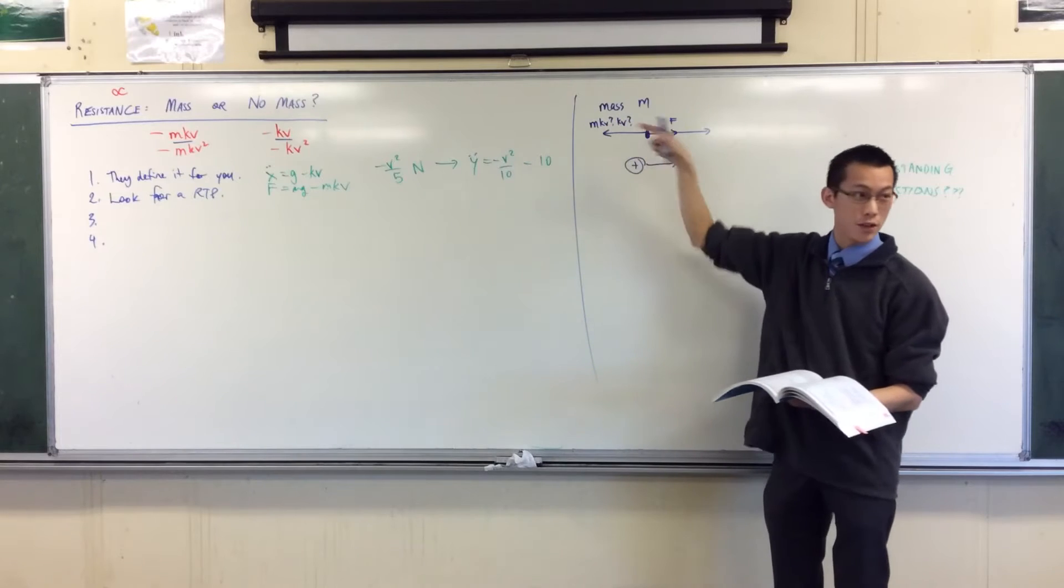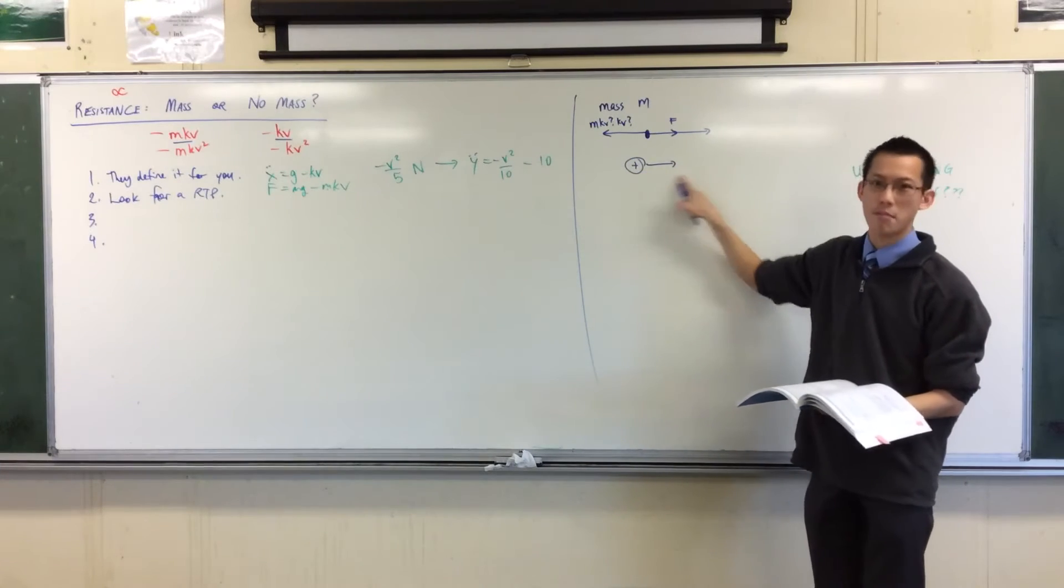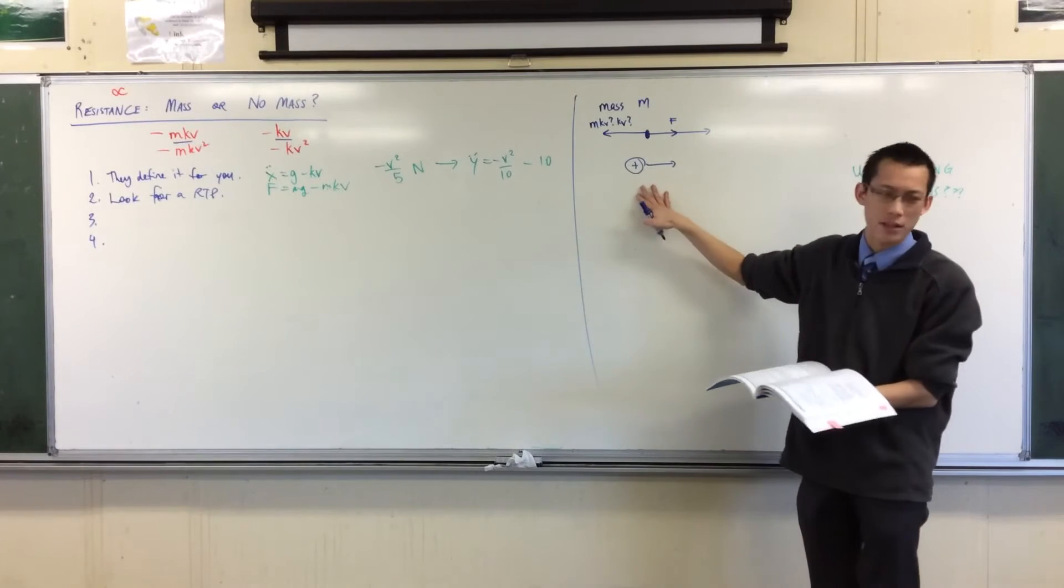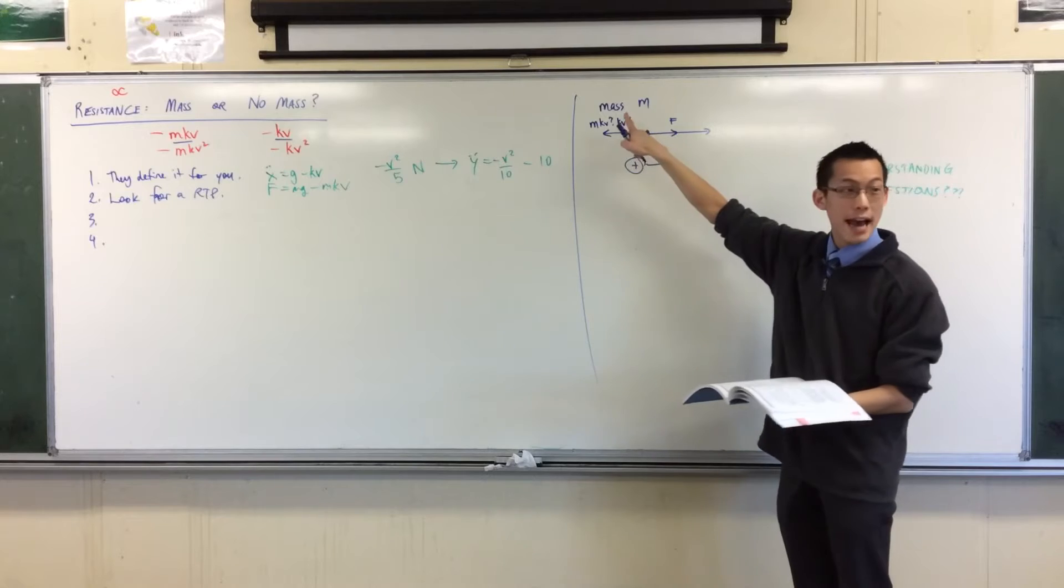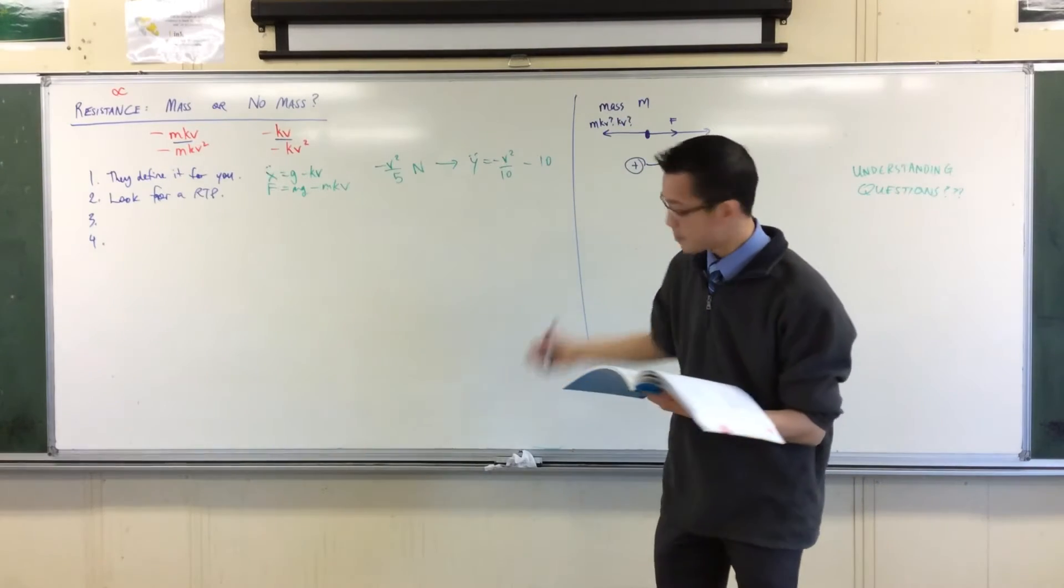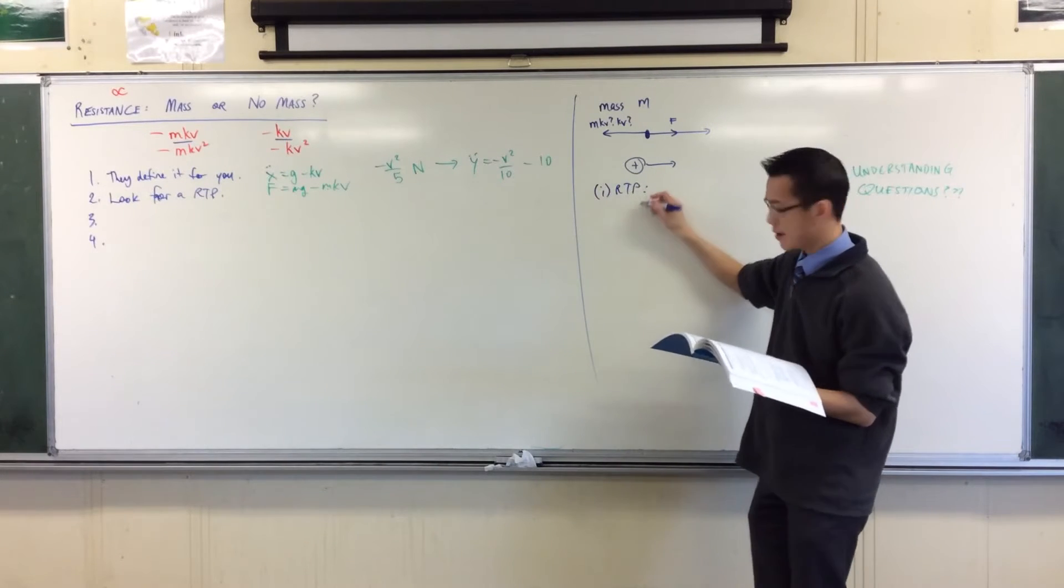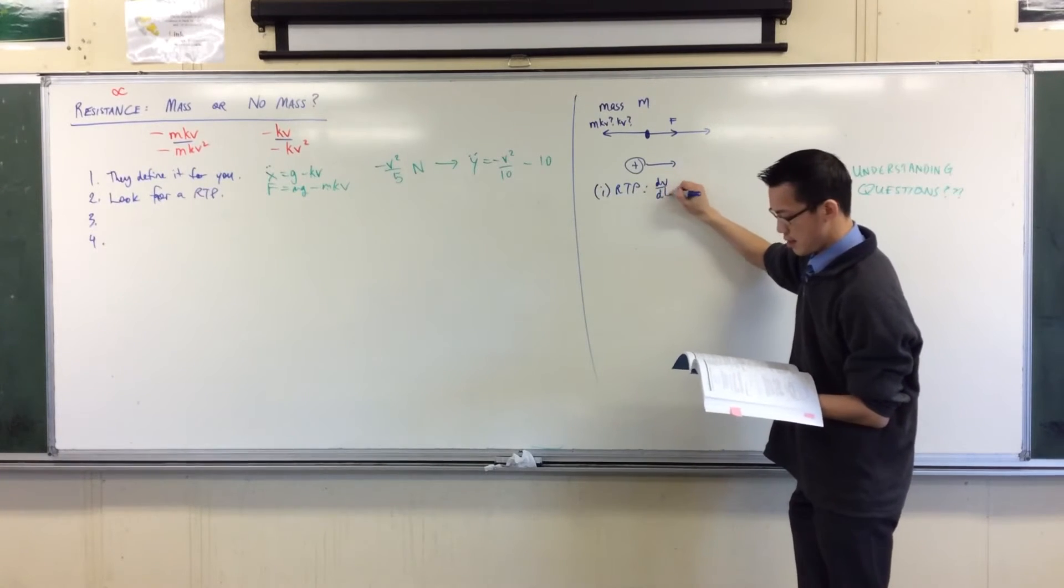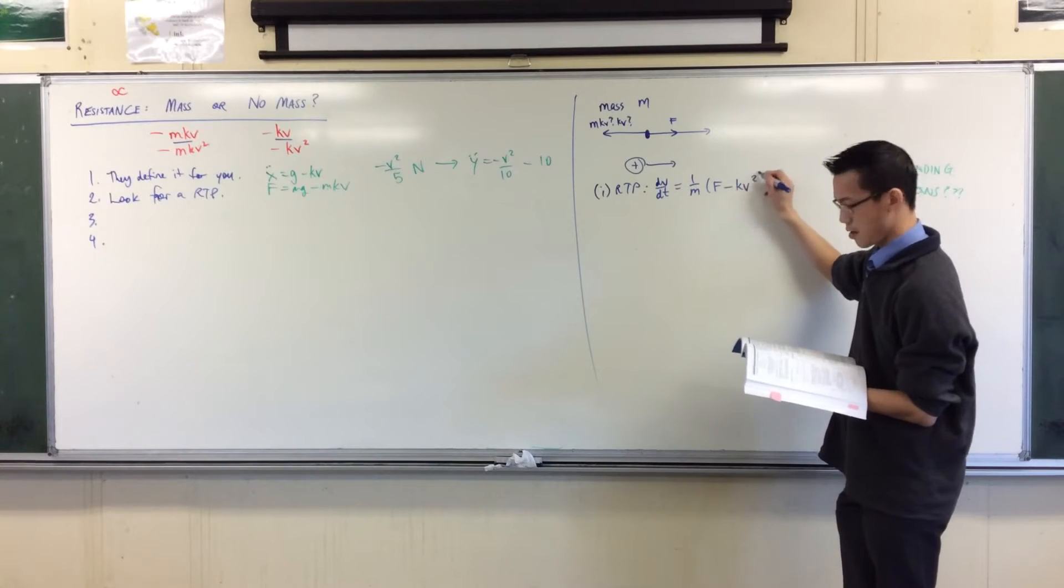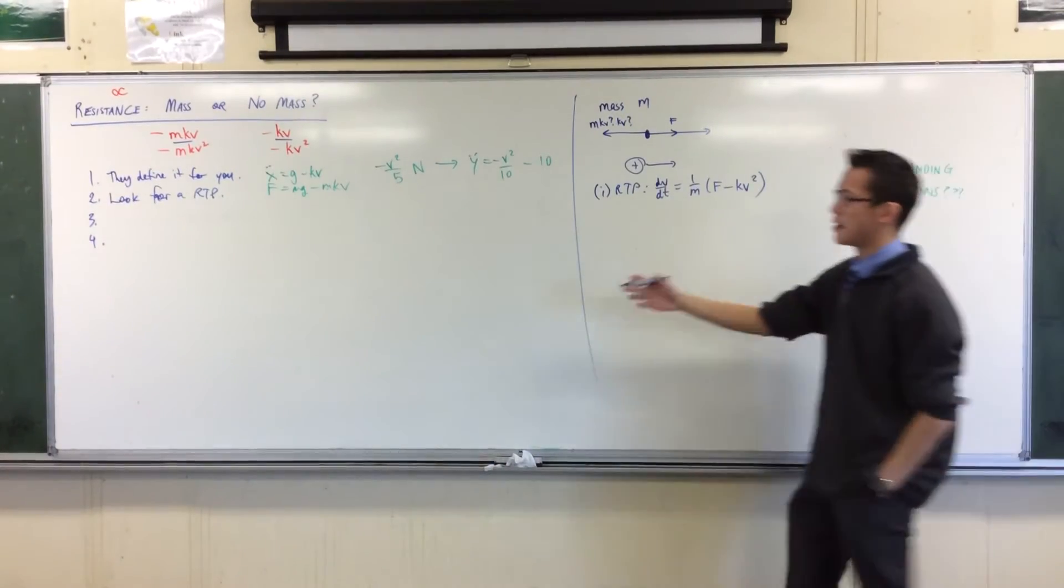You can see I put it over here to represent it's opposing the motion, this is my axis. You must always define which way you think is positive or negative. But then part one says this: I'm required to prove that dv/dt equals 1 over m, F minus kv squared.